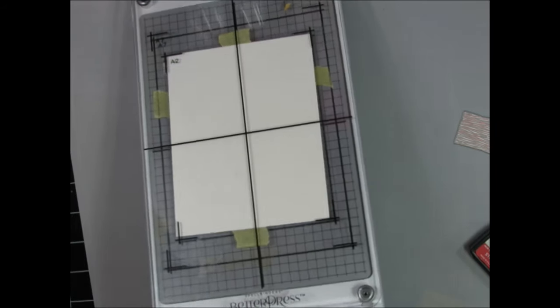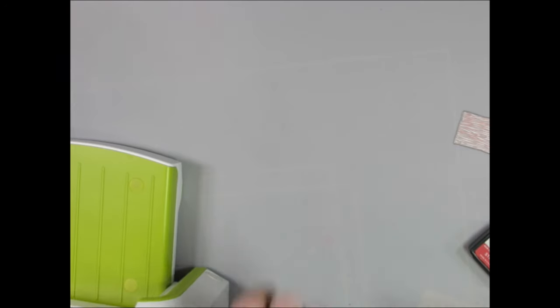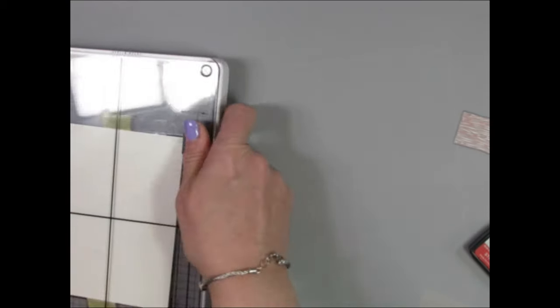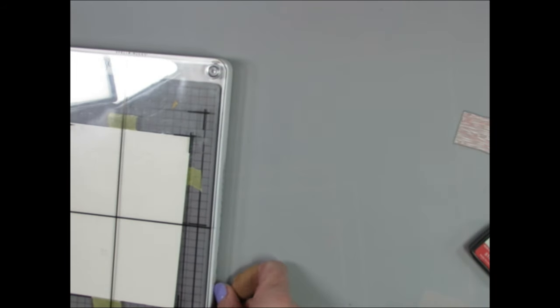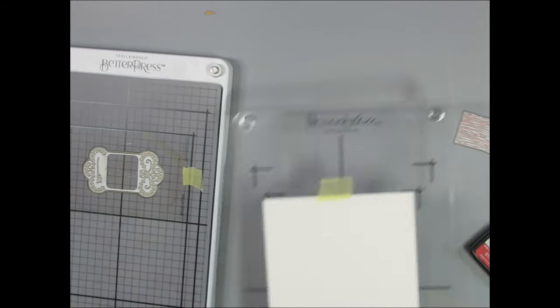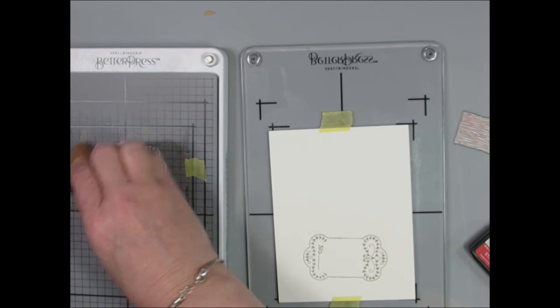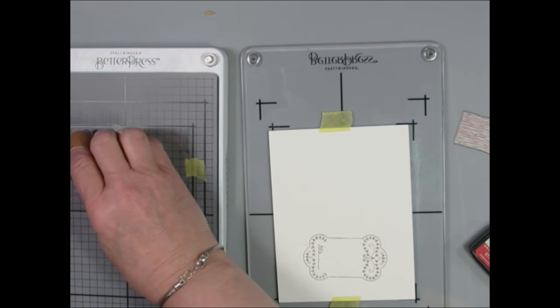So off camera I taped that piece of this colored cotton card panel onto the plate. Now I'm running it through my Platinum 6. Be careful not to touch that top plate. Don't press down. I didn't mean to do that. I try not to do that because I think it could result in like a double registration.